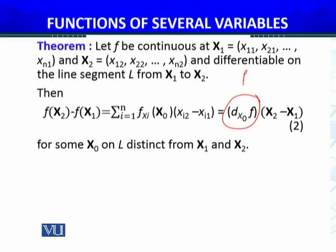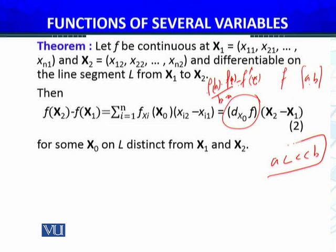Let me recall the mean value theorem for one variable. If f is defined on the closed interval [a,b], continuous on the closed interval, differentiable on the open interval, then f of b minus f of a over b minus a equals f dash of c, where c is between a and b. For functions of several variables...